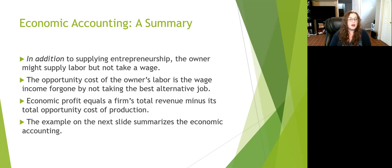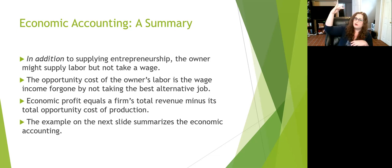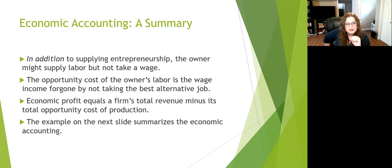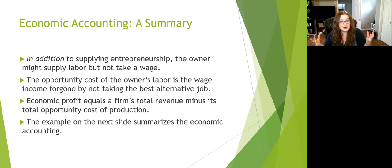Opportunity cost is the foregone income from the next best option. Economic profit equals a firm's total revenue minus the total opportunity cost of production — not only what we spent money on, but what else that money could have done, what interest or value we could have gotten. That's what we consider in economics. In accounting, we look at money in, money out, and pay the taxes. In economics, we look at the system and figure out: is this actually a good idea? What else could we be doing?